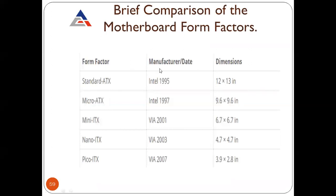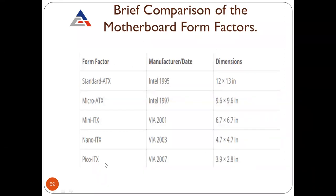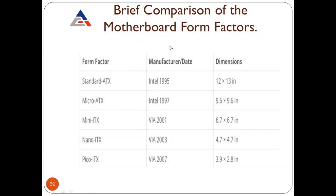Here is the comparison of motherboard form factors: Standard ATX — designed by Intel in 1995, dimensions 12 × 13 inches. Micro ATX — developed by Intel in 1997, dimensions 9.6 × 9.6 inches. Mini ITX — 2001, dimensions 6 × 7 inches. Nano ITX — designed by VIA in 2003, dimensions 4 × 7 inches. Pico ITX — designed by VIA in 2007, dimensions 3.9 × 2.8 inches, which is 75% smaller than Mini ITX.